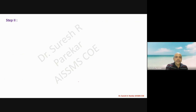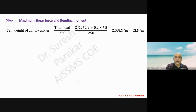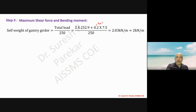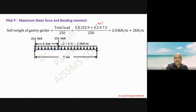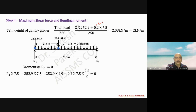In Step 2, we find maximum shear force and bending moment. Self weight of gantry girder equals total load divided by 250, giving 2 kilonewton per meter. Total factored load includes two wheels: 2 into 252.9, plus rail self weight 0.2 into 7.5. From this loading condition, one wheel load is on the support, and we find reactions R1 and R2 by taking moment about R2.